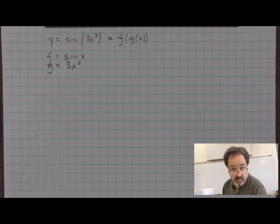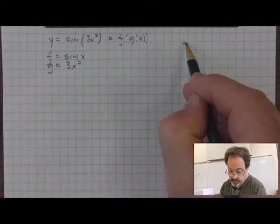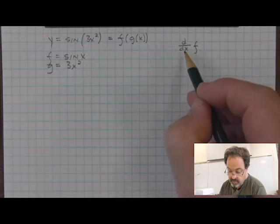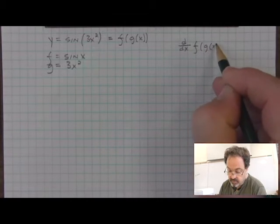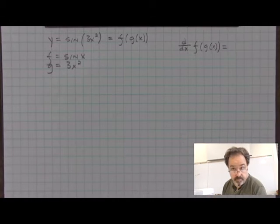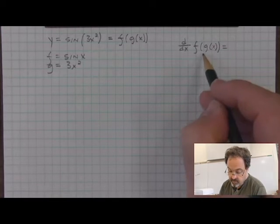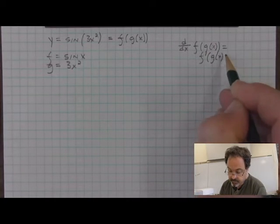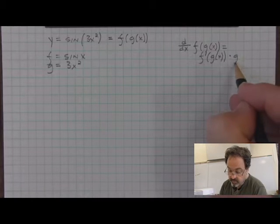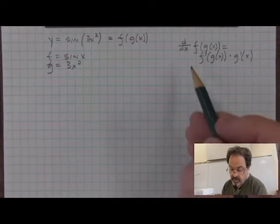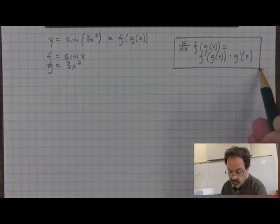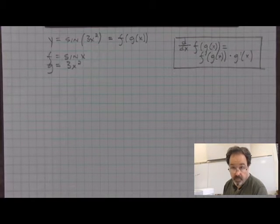How do we take the derivative of a function like this? The derivative of a composite function — in this case d/dx of f composed with g — is equal to the derivative of the outside function composed with the inside function, times the derivative of the inside function. This is what we call the chain rule, and I'll explain in a moment with another example of why we call it the chain rule.